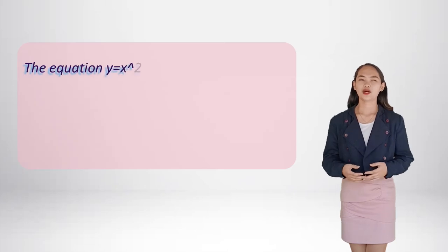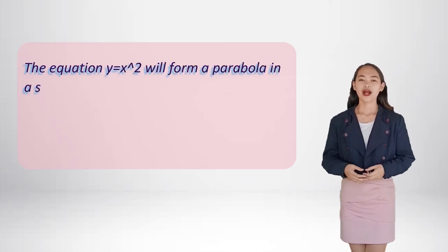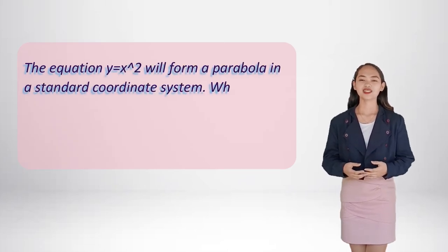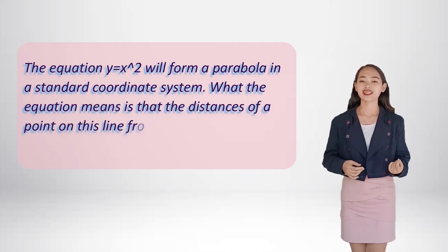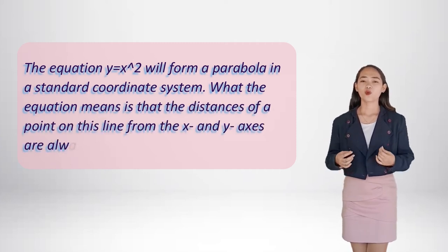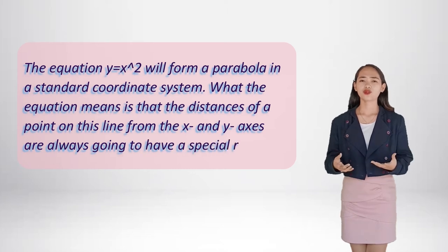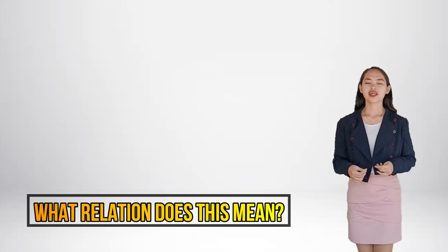The equation y is equal to x squared will form a parabola in a standard coordinate system. What the equation means is that the distance of a point of this line from the x and y axis are always going to have a special relation. What relation does this mean?